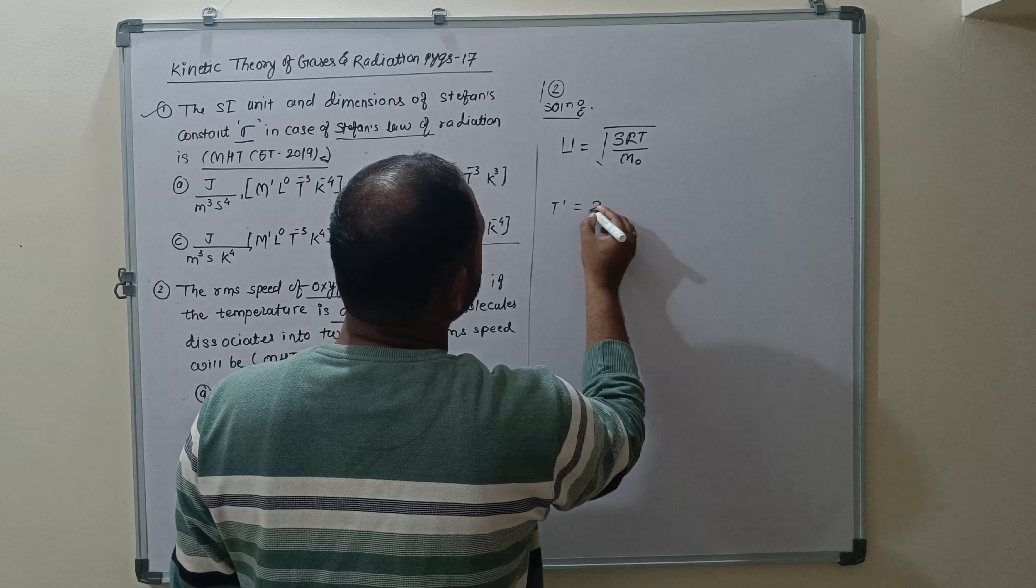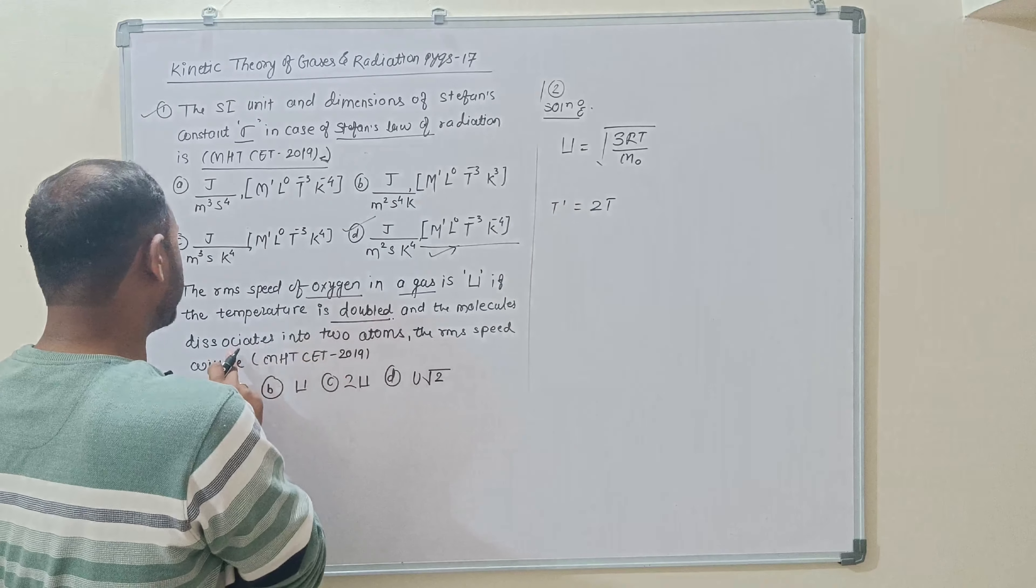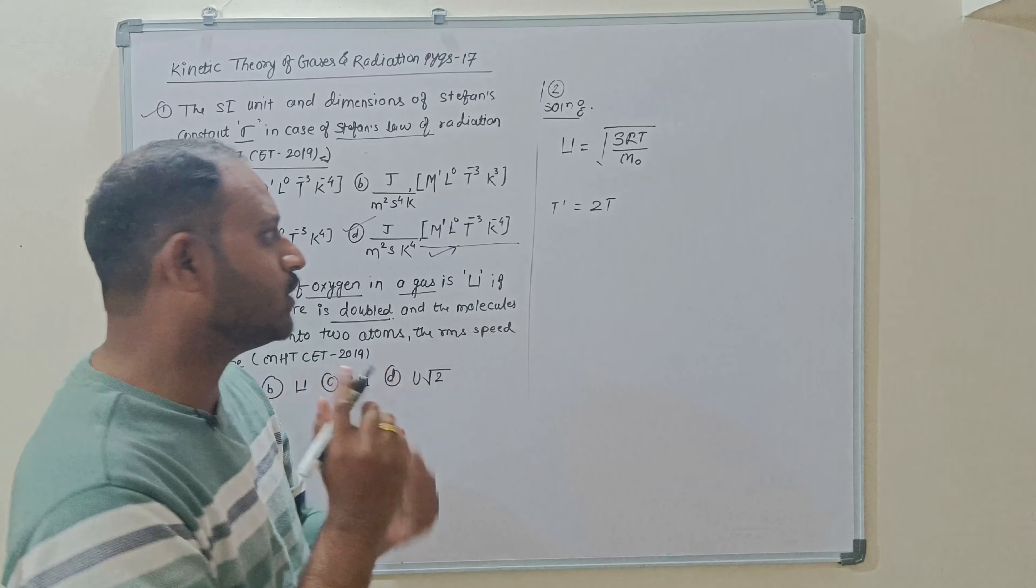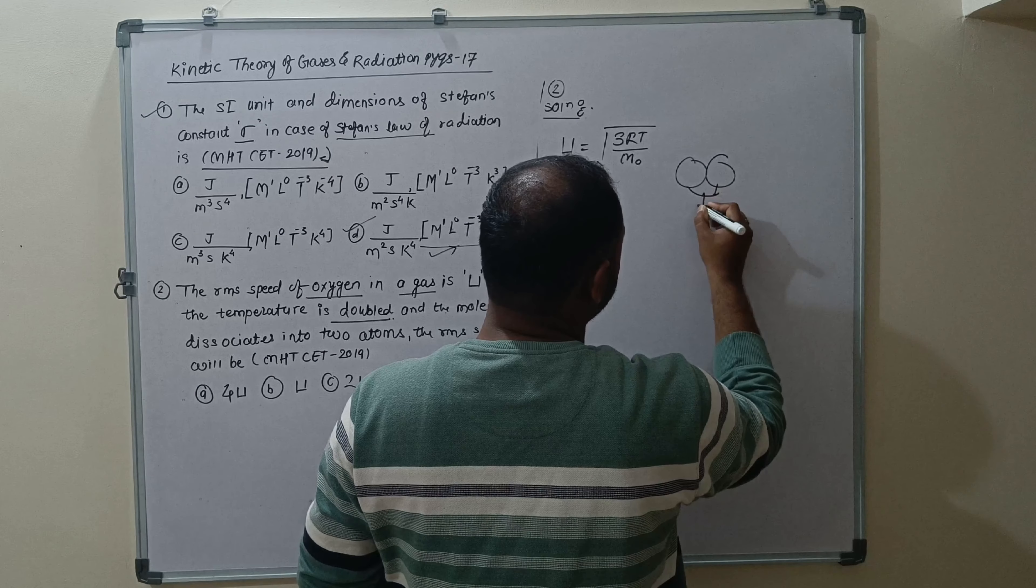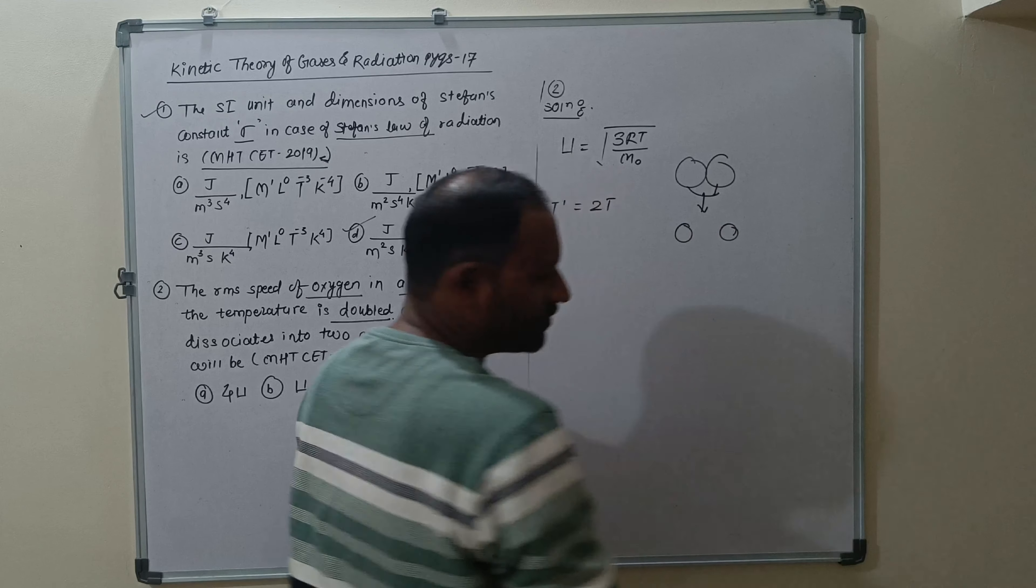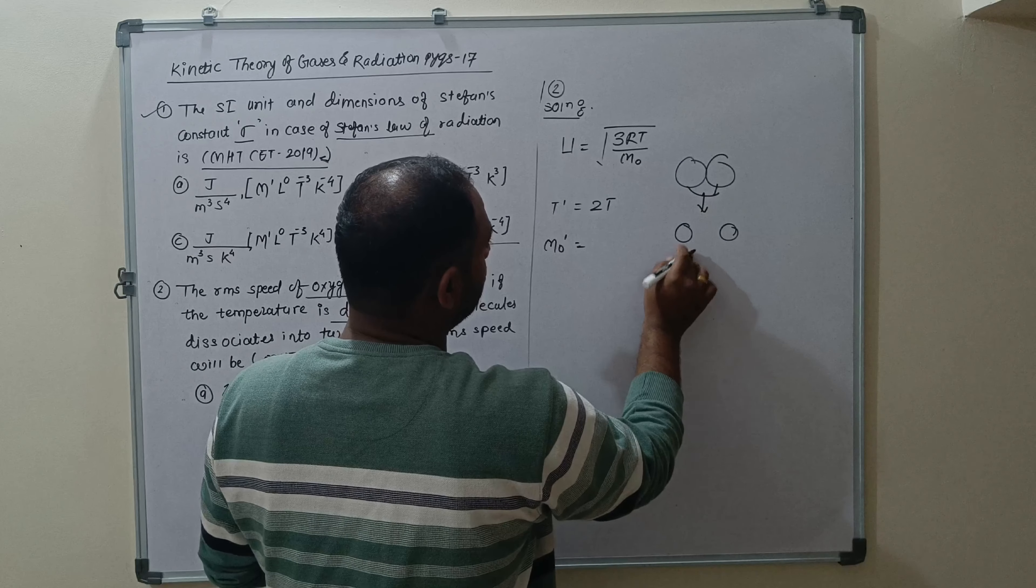The RMS velocity formula is square root of 3R times T. R is universal gas constant, T is nothing but the temperature absolute, and M not is nothing but the molar mass of that given gas. The temperature doubles and the molecules dissociate into atoms.